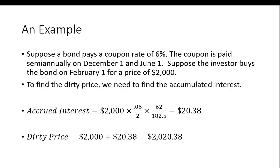So the dirty price of the bond for the investor who buys it on February 1st would be the $2,000 plus the accrued interest of $20.38. So they would get $2,020.38. Relatively simple to do once you know this simple calculation.